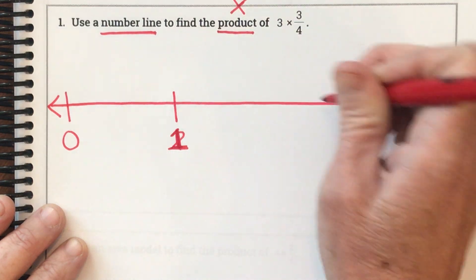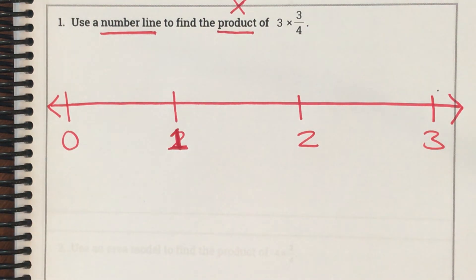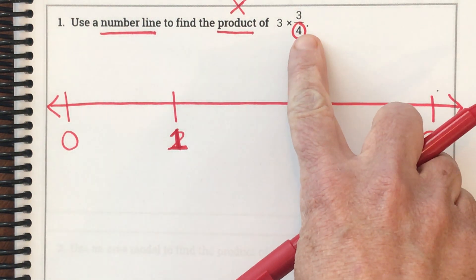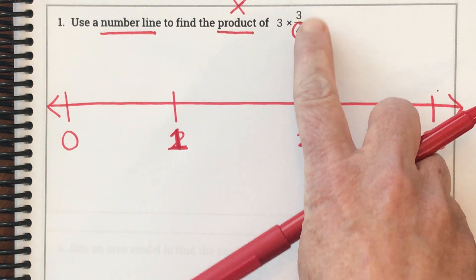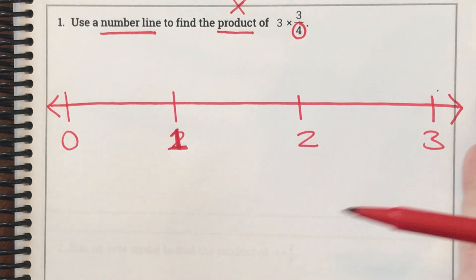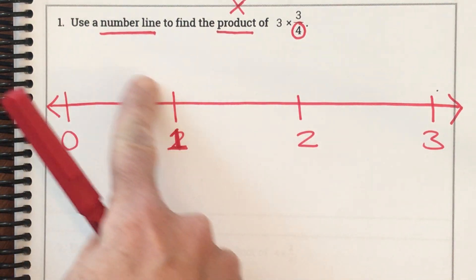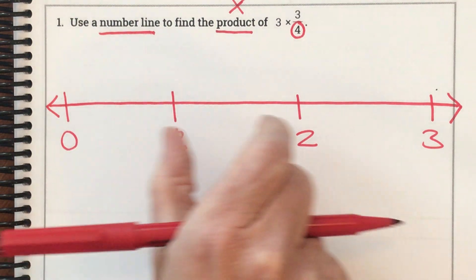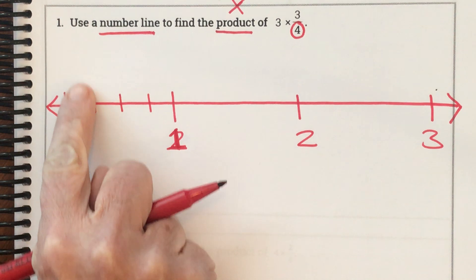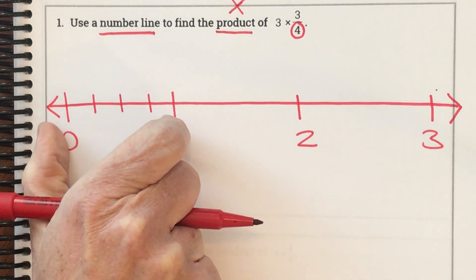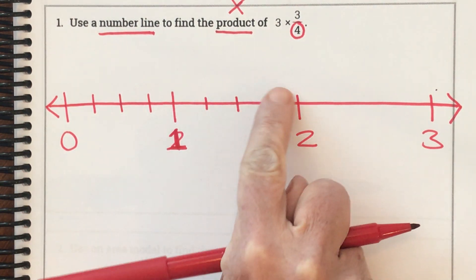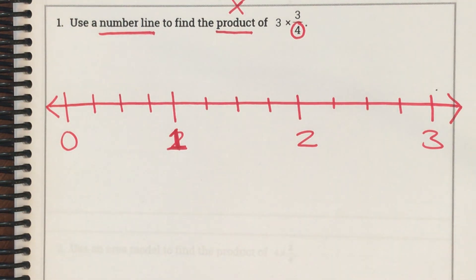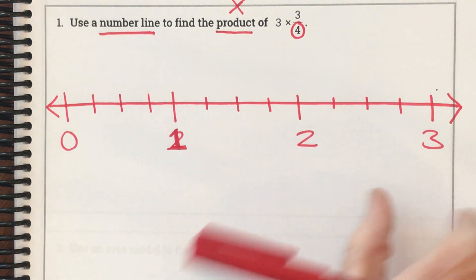I already made a mistake — that's supposed to be a one. I'm going to go up to three. When I divide this number line, I use my denominator to tell me how many parts to break it into. This means a whole was cut into four pieces — that's what the denominator tells you. Zero to one is a whole, one to two is a whole, and two to three is a whole. So this denominator of four tells me each whole needs to be divided into four pieces.